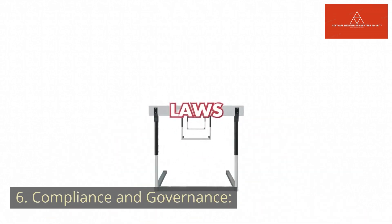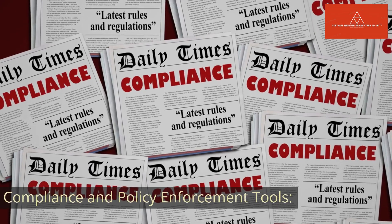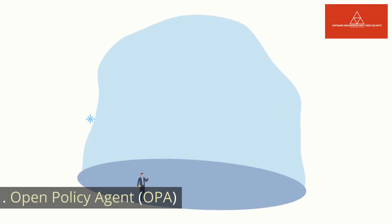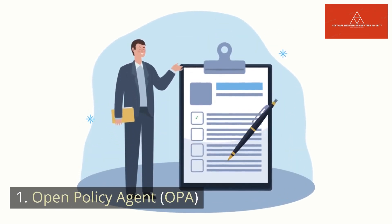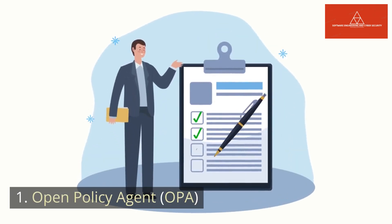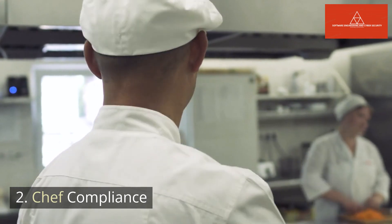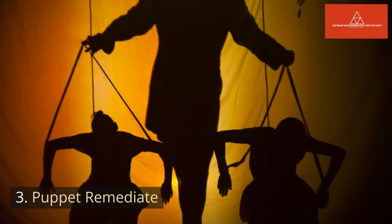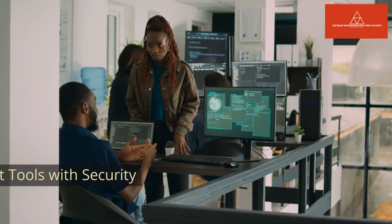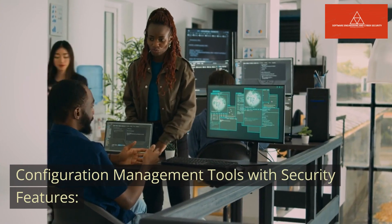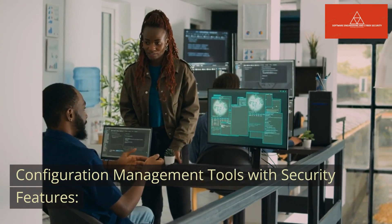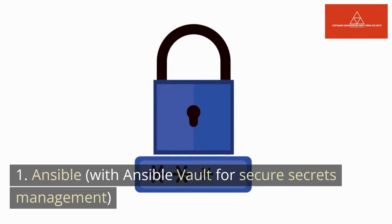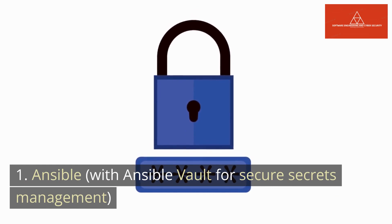Compliance and Governance — Compliance and Policy Enforcement Tools: 1. Open Policy Agent (OPA), 2. Chef Compliance, 3. Puppet Remediate. Configuration Management Tools with Security Features: 1. Ansible, with Ansible Vault for secure secrets management.